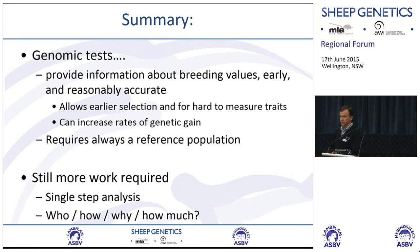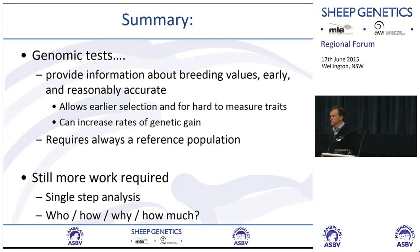So that's the summary — genomic tests give us more information to calculate breeding values earlier in life with reasonable accuracies. It requires a reference population to be maintained. Different enterprises have different reasons why genomics might be useful to them. More work is still required on single step analysis and how it will all be valued. Any questions?